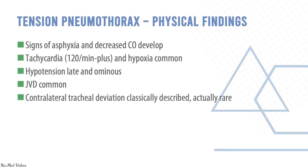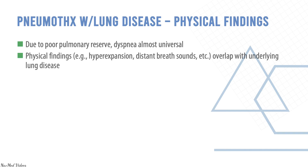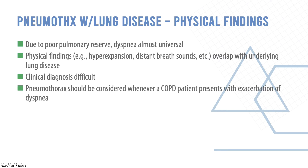Importantly, the absence of all or any of these findings does not exclude pneumothorax. For tension pneumothorax there are additional signs. In pneumothorax with underlying lung disease, due to poor pulmonary reserve, dyspnea is almost universal. Physical findings include hyperexpansion and distant breath sounds that overlap with the underlying lung disease, making clinical diagnosis difficult. Pneumothorax should be considered whenever a COPD patient presents with an exacerbation of dyspnea.